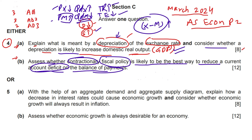Moving to the analysis part: how does contractionary fiscal policy achieve the objective? In contractionary policy, tax rates increase, government expenditure decreases, and aggregate demand falls. You can make an AD-AS graph and shift the AD curve to the left. When aggregate demand falls, price level decreases, real GDP falls, economic growth slows, unemployment rises, but price level is controlled.